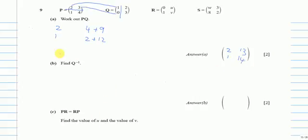Part B. We have to find the inverse of Q, which is very easy. First of all, we'll find the determinant. The determinant is AD minus BC. So I will multiply these two, then these two, and subtract the two values. So it will be 1 times 3 is 3, and then 2 times 0 is 0, so no need to write. So this is my determinant.